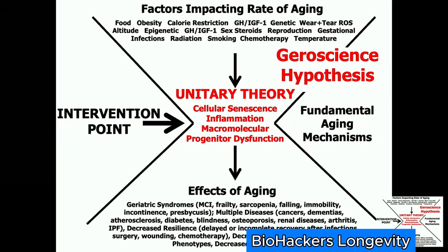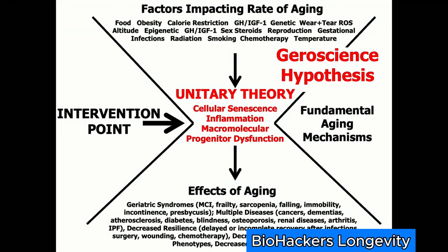Decreased remaining survival, aging phenotypes, and reduced reproduction. The unitary theory holds that these fundamental aging processes — pillars of aging — however you want to slice and dice them into anywhere from 4 to 15 groups, are highly interlinked. And in general, but not always, if you target one of them, you tend to affect all the rest.